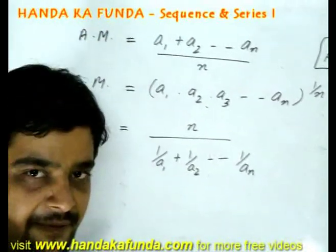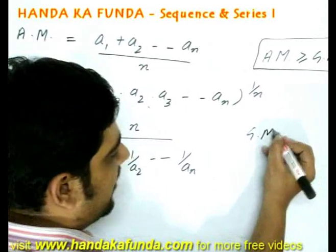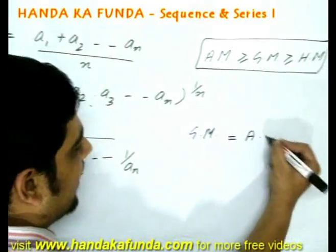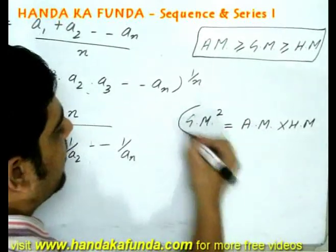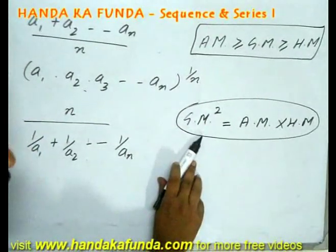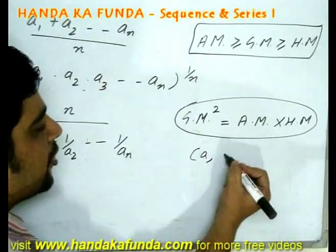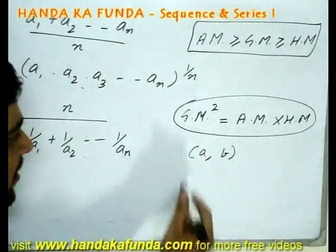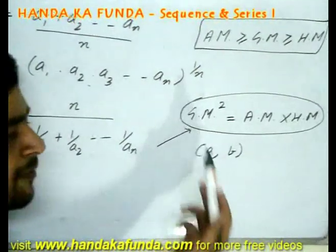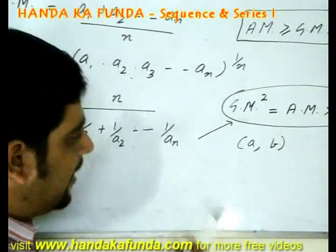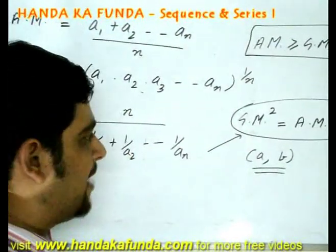There is another formula which holds true in case of geometric mean and arithmetic mean. That is arithmetic mean into harmonic mean is geometric mean squared. But please remember this formula is applicable if and only if you are considering two values A and B. Please remember it is a very common mistake that people tend to make. We apply this formula anywhere and everywhere. That is not the case. It is applicable once again only when you have two values A and B.